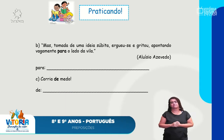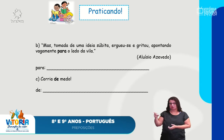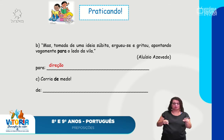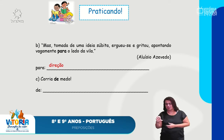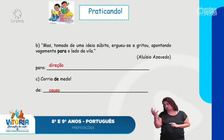Ainda de Aluísio Azevedo: 'Tomada de uma ideia súbita, ergueu-se e gritou, apontando vagamente para o lado da vila.' A palavra 'para' indica direção — ele apontou para onde? Para o lado da vila. 'Corria de medo' — ele corria, por que? Porque estava com medo. Esse 'de' indica causa — o porquê de ele estar correndo.